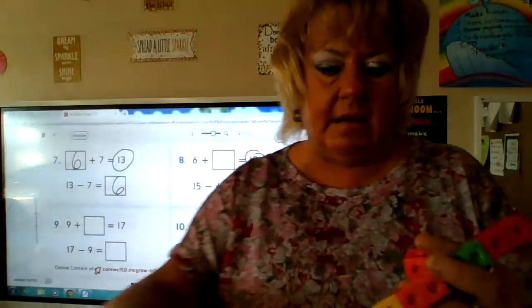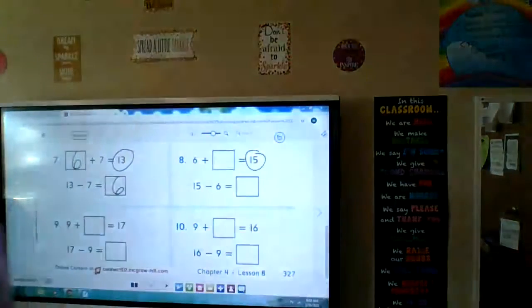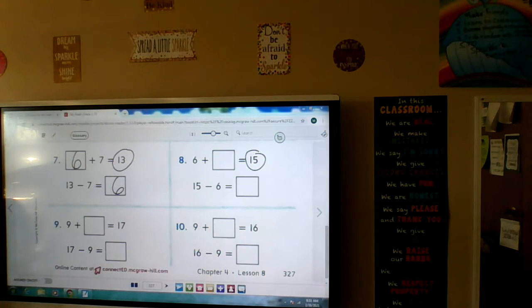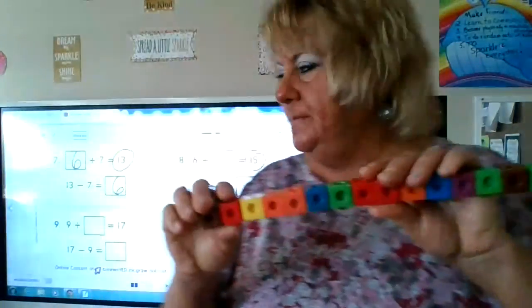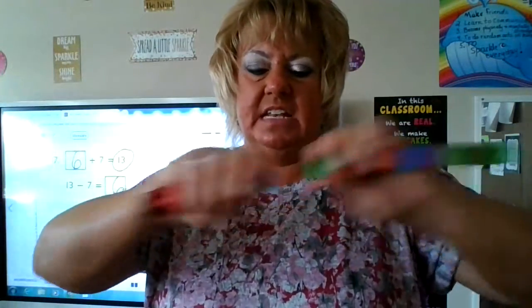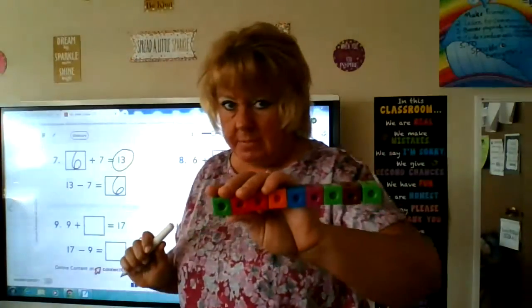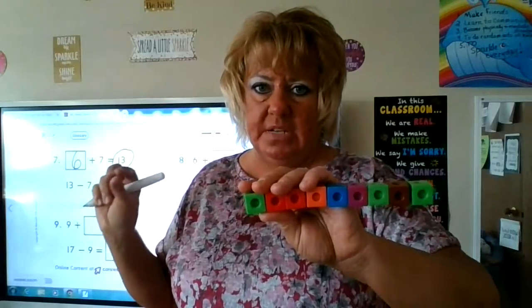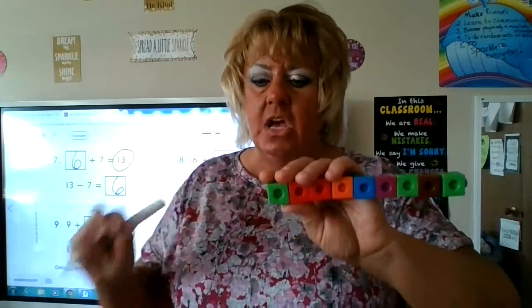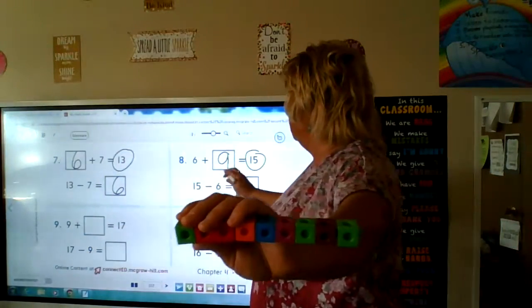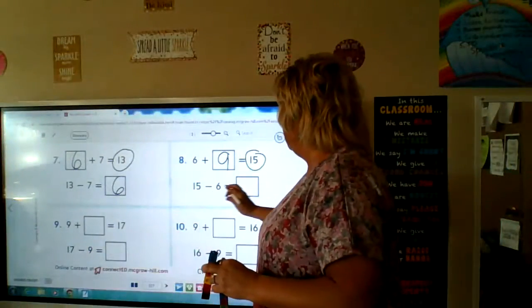Our whole is 15, so start with 15 and take away 6: 1, 2, 3, 4, 5, 6. The parts of 15 are 6 and the missing addend — remember, addends are the two numbers put together when you add. We knew one addend was 6; the other is 9. If we take away 6 from 15 we get 9, so 15 minus 6 is 9.